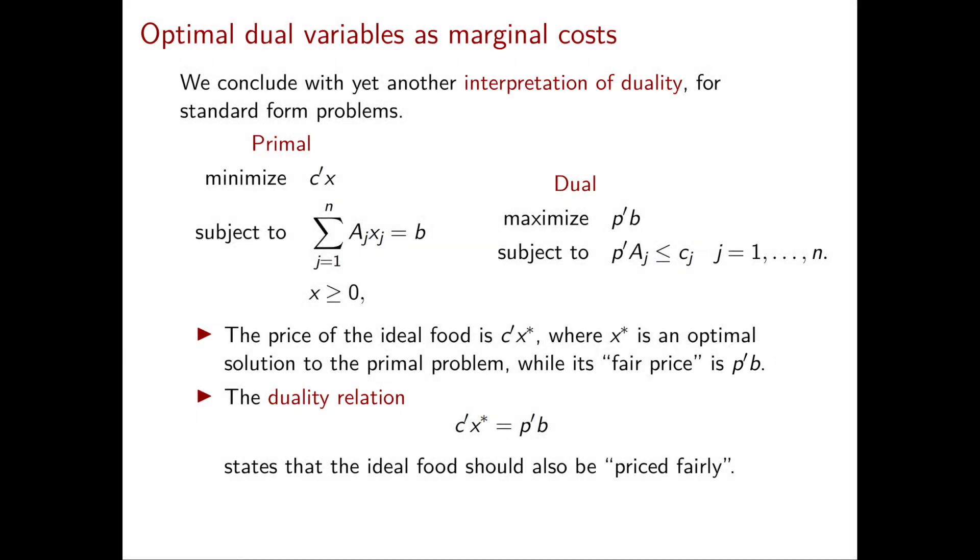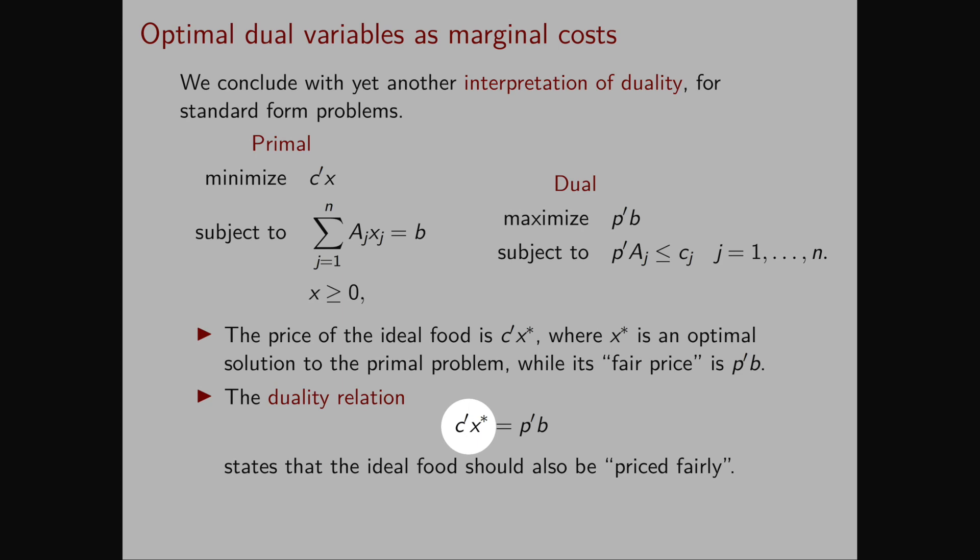Now, from our duality theorems, we know that the optimal cost of the primal, C transposed X star, is equal to the optimal cost of the dual, which is P transpose B.